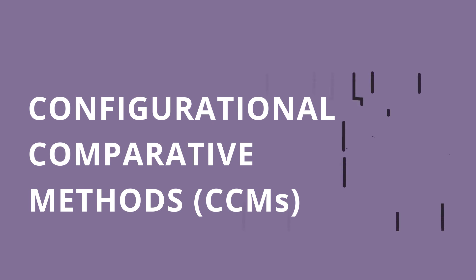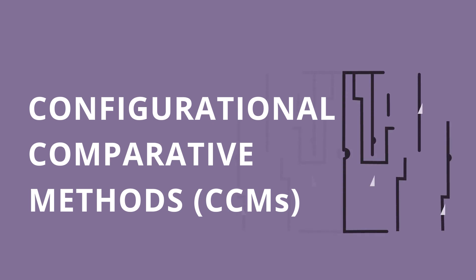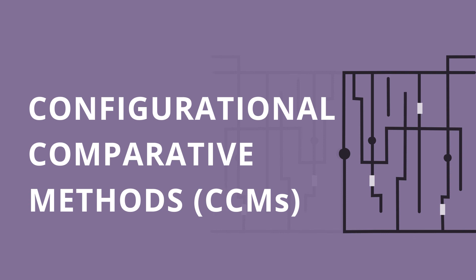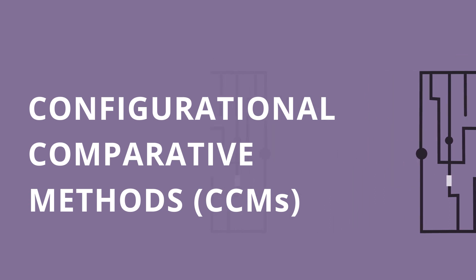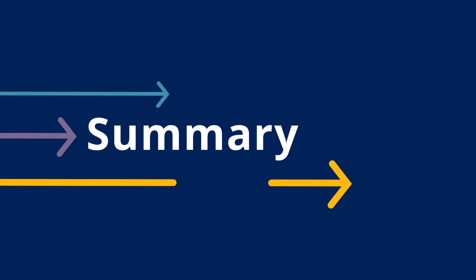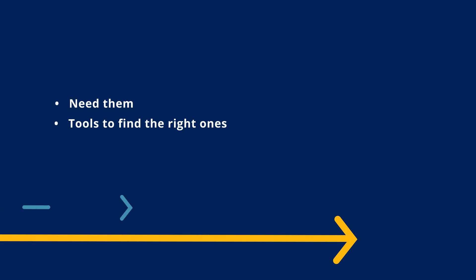You can think about it like trying to find your way through a circuit and figure out which pathway works the best — which combinations of strategies will work well together. In summary, implementation strategies: we need them, we need tools to find the right ones, and we need to make sure there are no more black boxes. That's all for now. See you soon!